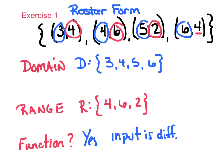Now, if you got stuck on that, you could quickly plot those points and see if they passed the vertical line test. If I went up 3 over 4, up 4 over 6, up 5 over 2, and up 6 over 4, and I drew a vertical line, those would all pass the vertical line test — so another way to test for a function.